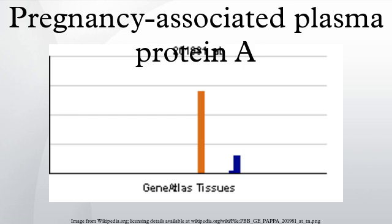PAPP-A, also known as pregnancy-associated plasma protein A, is a protein that in humans is encoded by the PAPPA gene. PAPP-A is used in screening tests for Down syndrome.